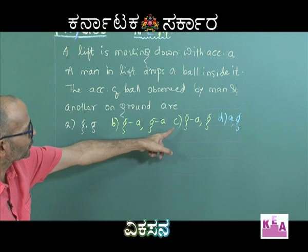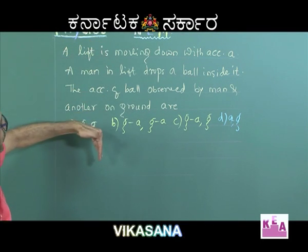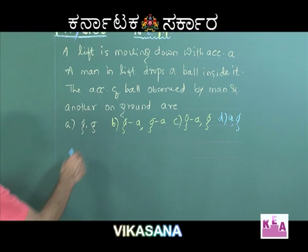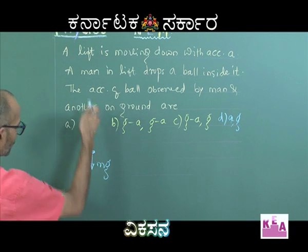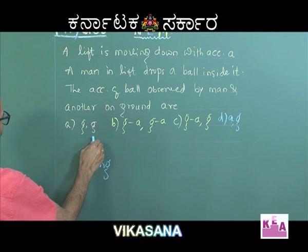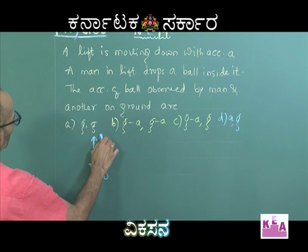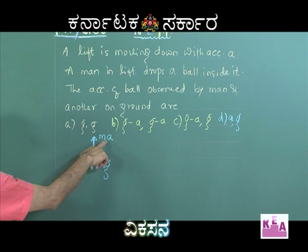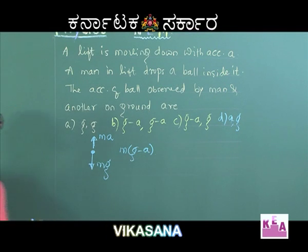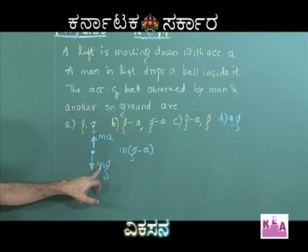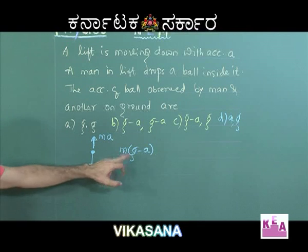A and G, or G-A and G, are the right options. As the lift is going down with an acceleration, the pseudo force will be acting upwards. In the free body diagram of the ball, mg acts downwards as the real force and the pseudo force acts upwards. The pseudo force is mass of the body multiplied by acceleration of the frame of reference. So the net force on the body is M(G-A), taking the downward direction as positive, so Mg is positive and Ma is negative.